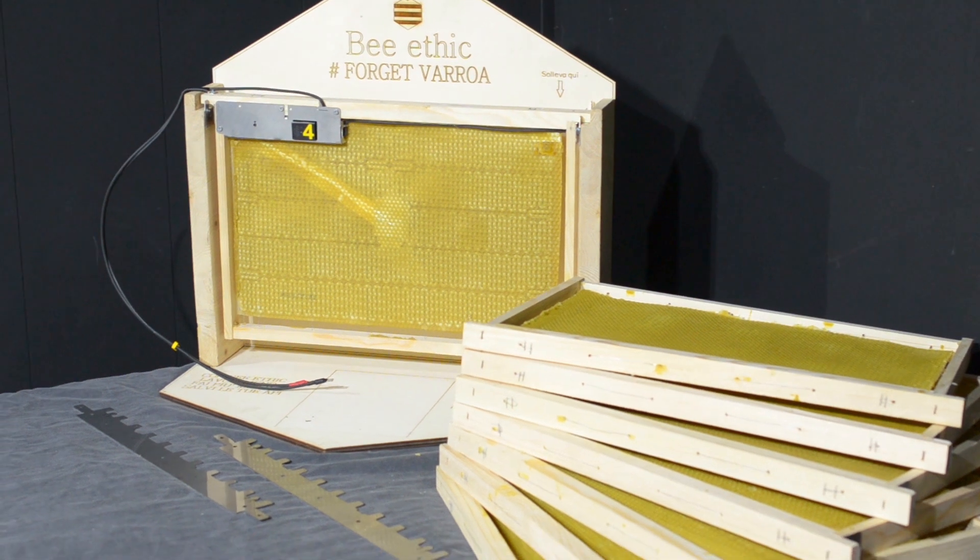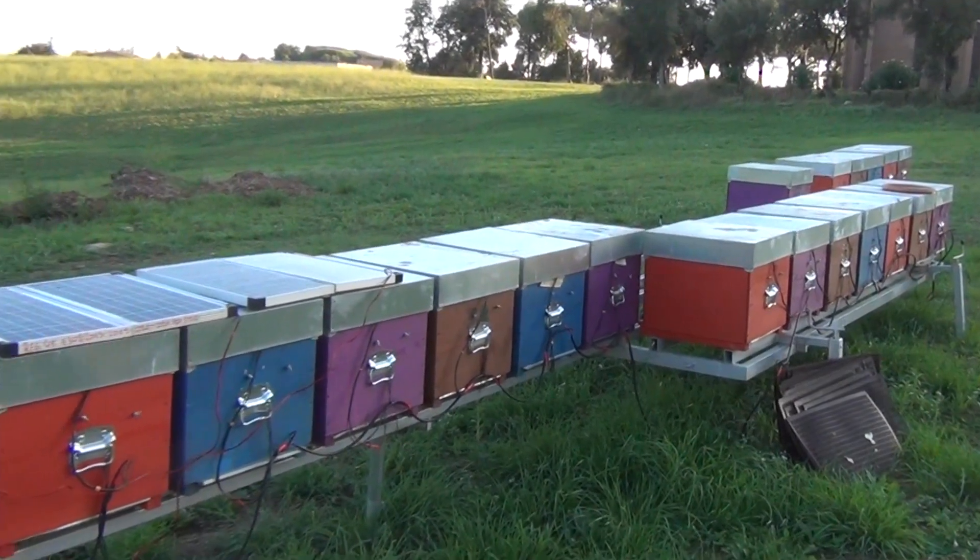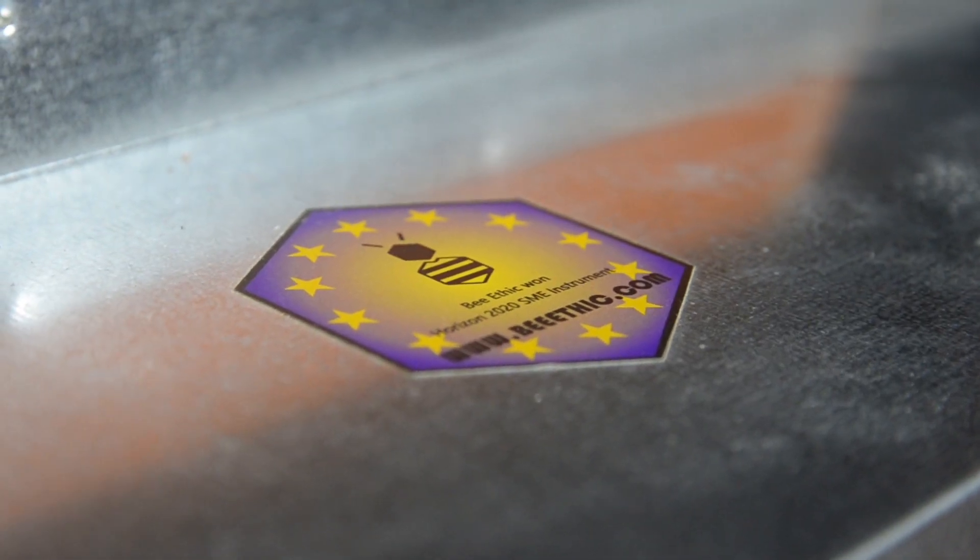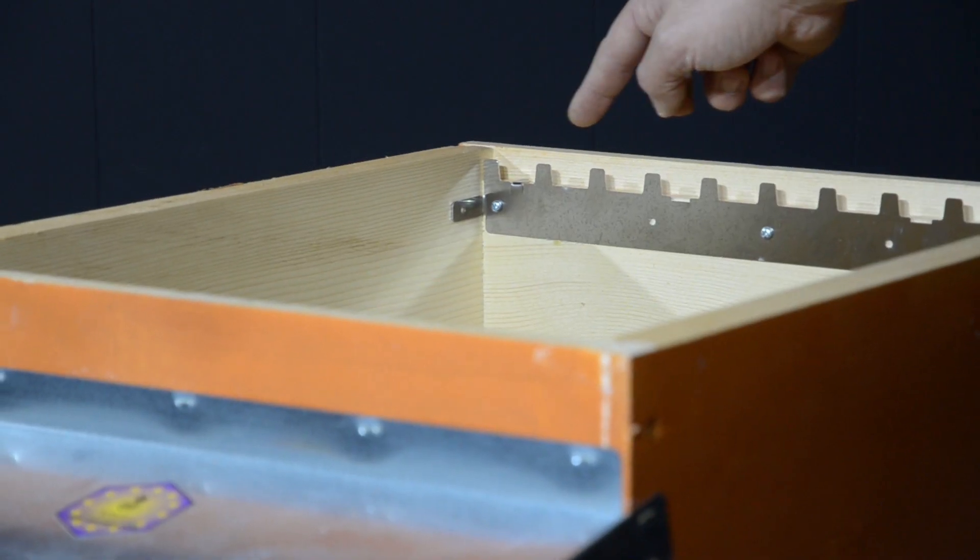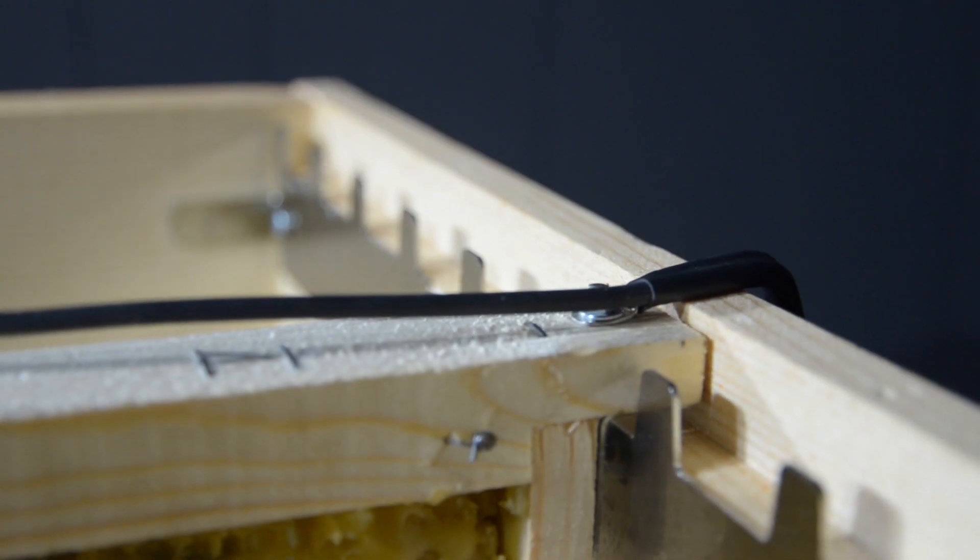Everyone will be able to wax and wax again the thermal frames. Thanks to our technology your bees will thrive. Let's find out how it works. The hive kit consists of two spacers and eight thermal frames. The central frame...